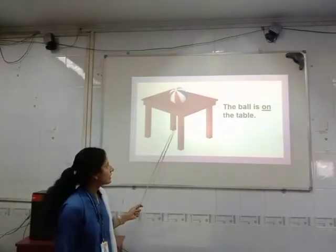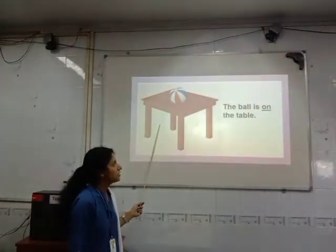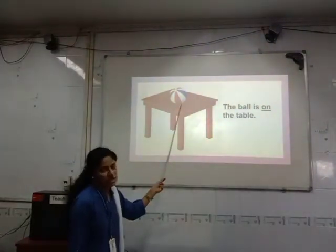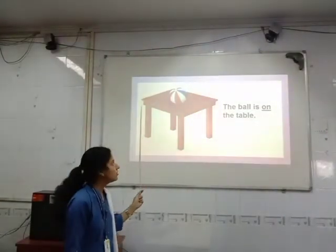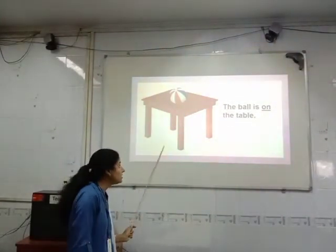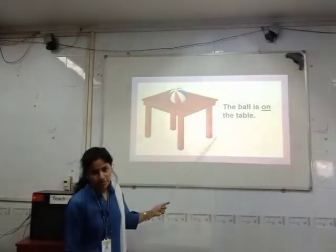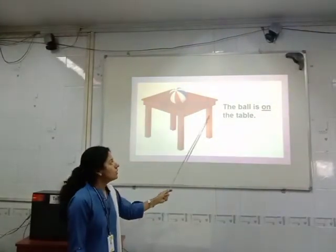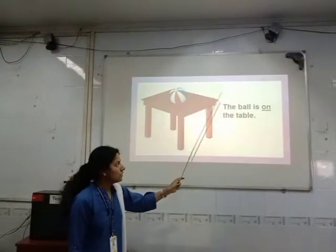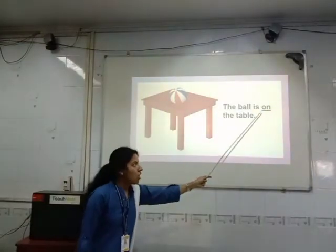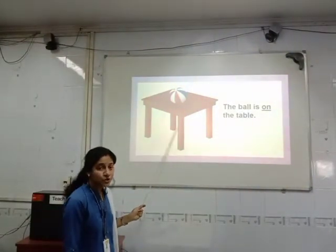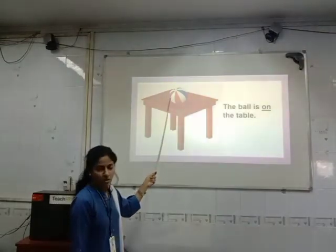Now see this picture again. Where is the ball? The ball is on the table. It is not under the table, not near the table. So where is the ball? The ball is on the table. So the word 'on' shows us exactly the position of the ball.